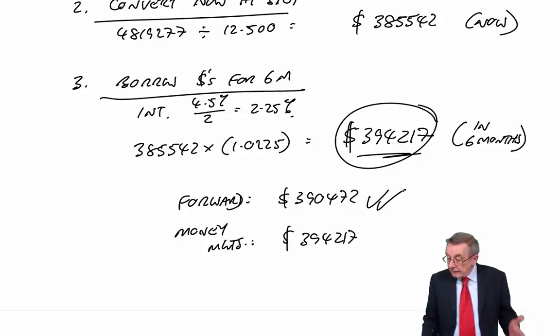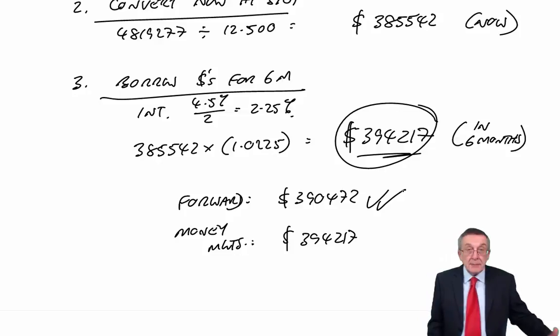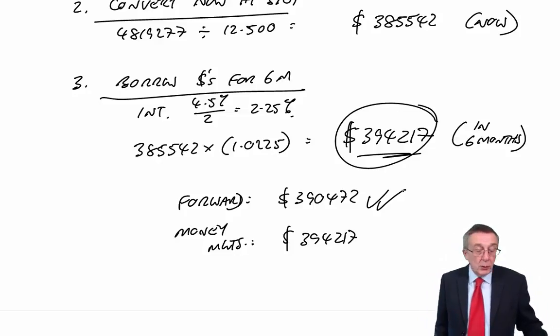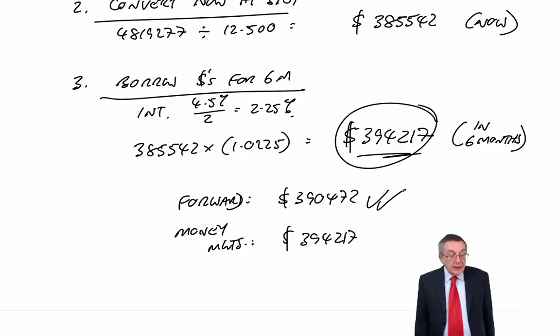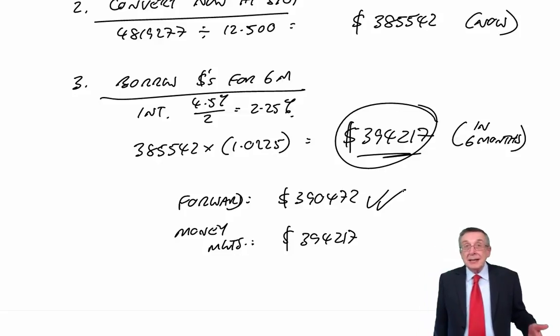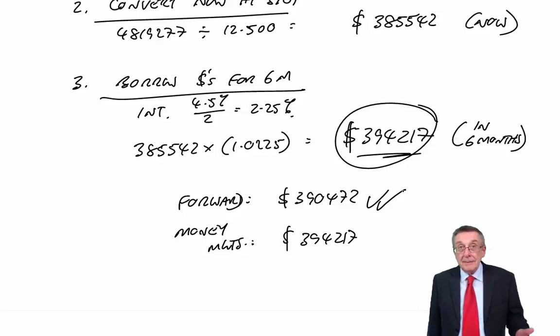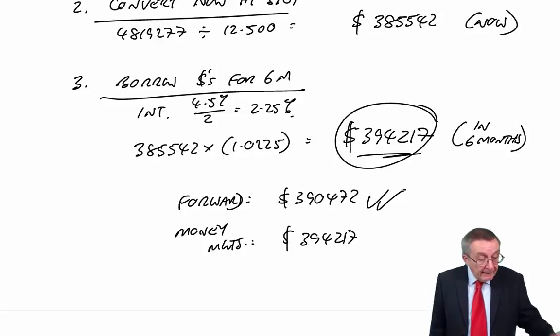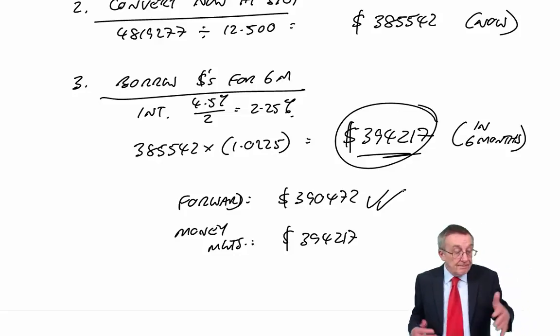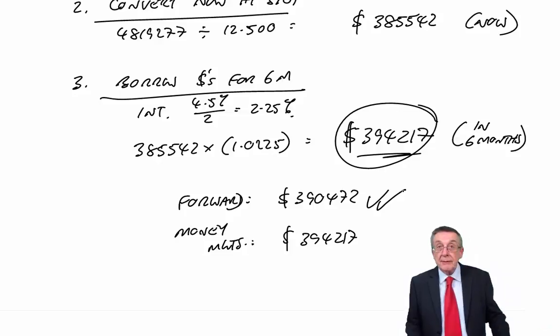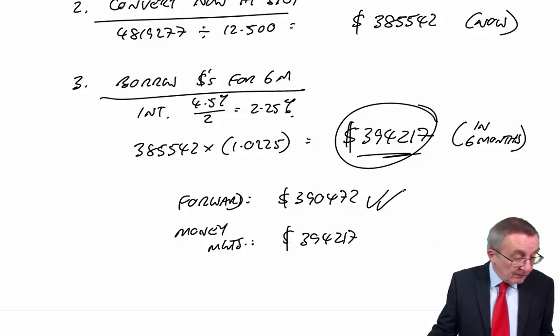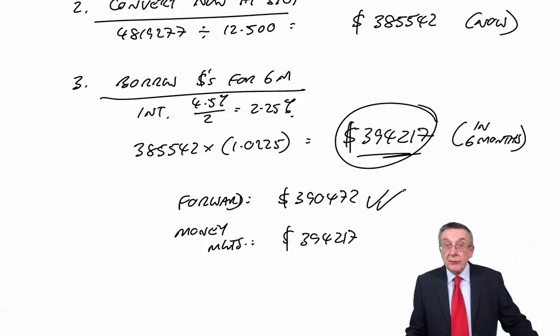So a very standard question. It certainly doesn't come up every time, but in terms of the arithmetic, when he does ask a foreign exchange one, the arithmetic can only be forward rates or money markets. You'd expect to have both as we've got here. There we are, there's question three.